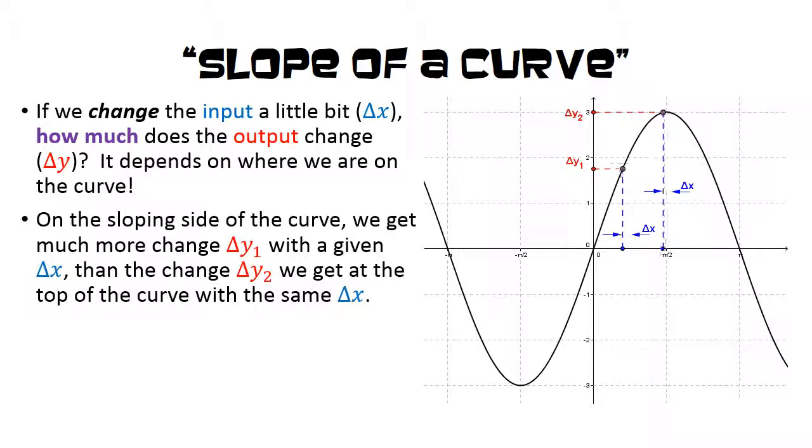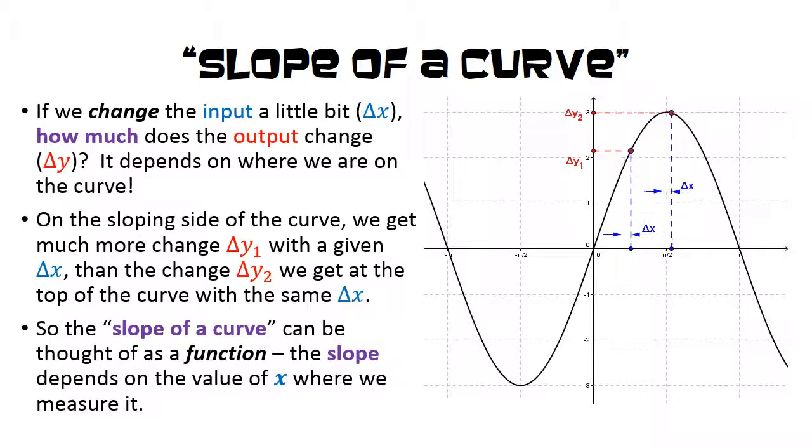On the sloping side of the curve, we get much more change, delta y1, with a given delta x, than the change, delta y2, that we get at the top of the curve, with the same input, delta x.